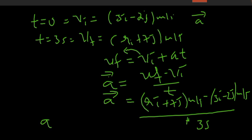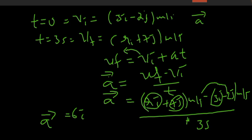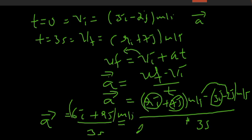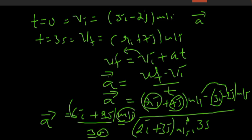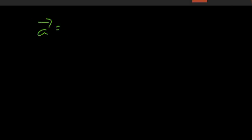So acceleration equals: (9i minus 3i) gives 6i, and (7j plus 2j) gives 9j, divided by 3 seconds. This gives 2i plus 3j meter per second squared. So acceleration is equal to 2i plus 3j meter per second squared.